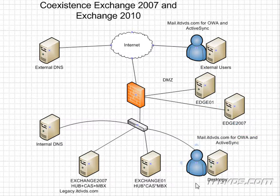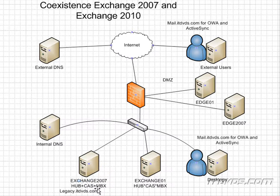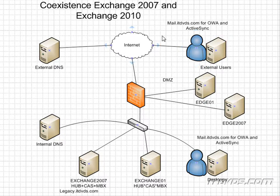That's Exchange 2007. And down here inside our network, we'll have Exchange 01, which is going to be our Exchange 2010 Hub Transport, Client Access Server, and mailbox server. And here's our existing Exchange 2007 Hub Transport, Client Access Server, and mailbox server. While we're coexisting with Exchange 2007 and Exchange 2010, mail from other mail servers will actually be able to go to either Edge Transport Server.